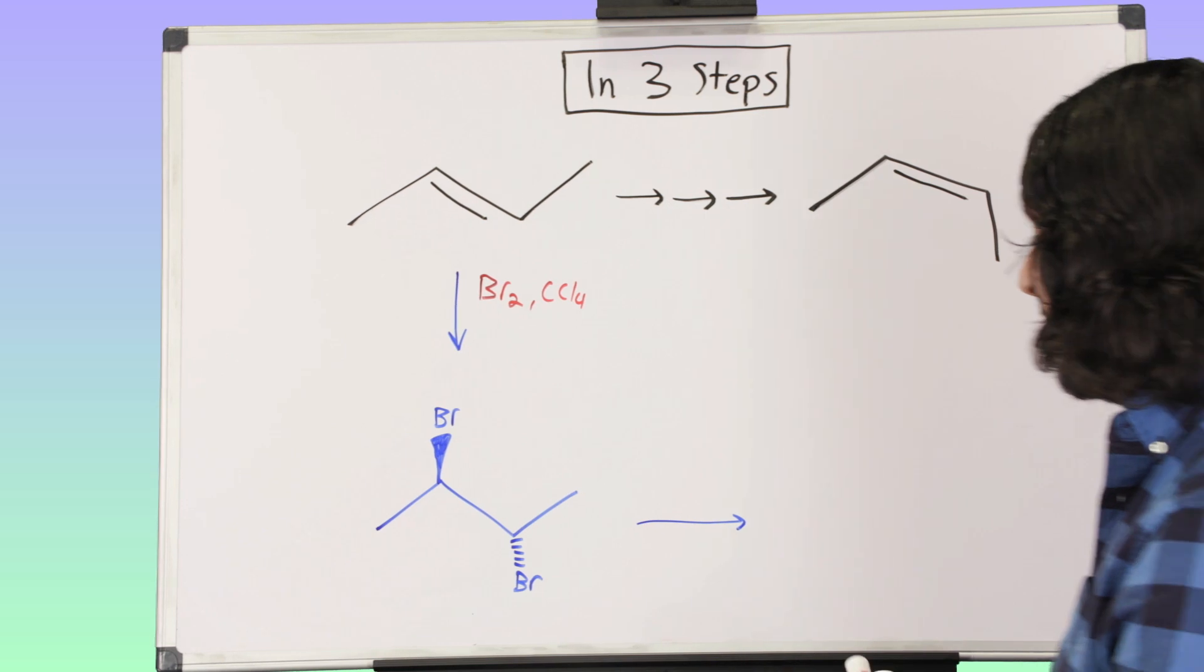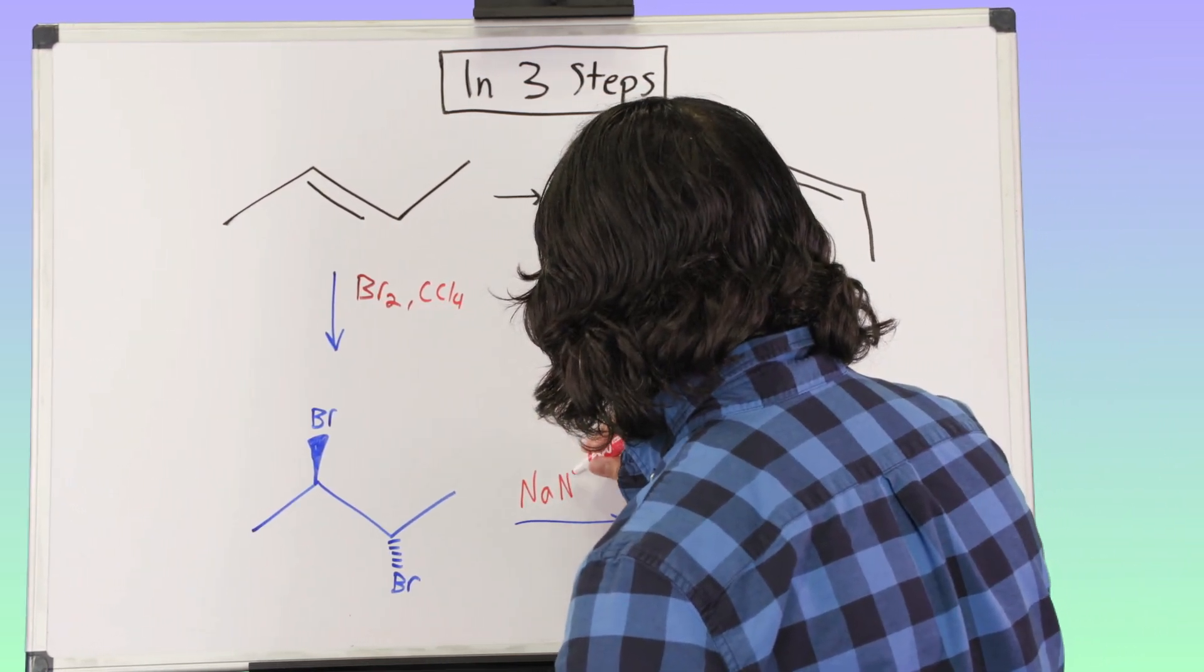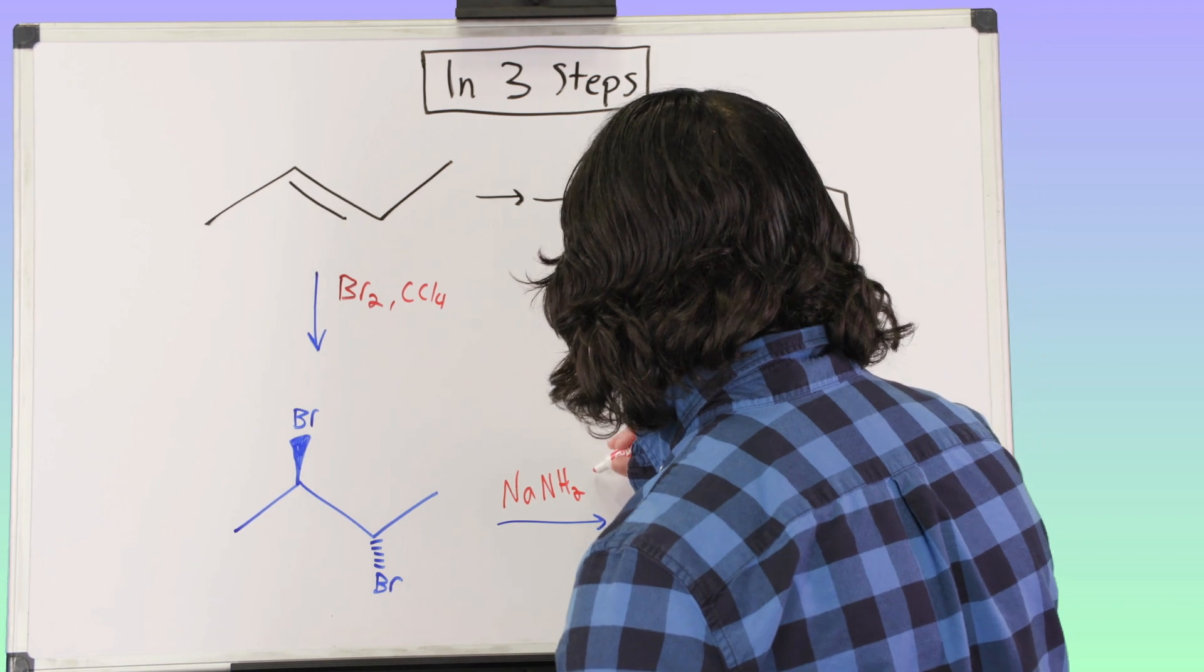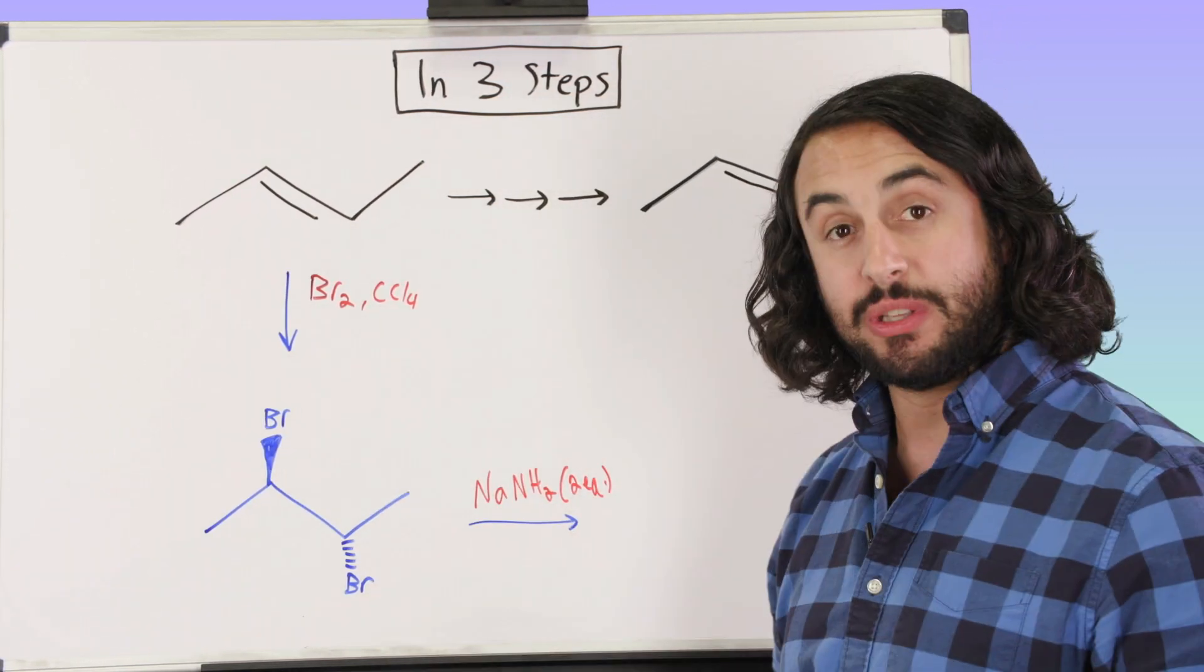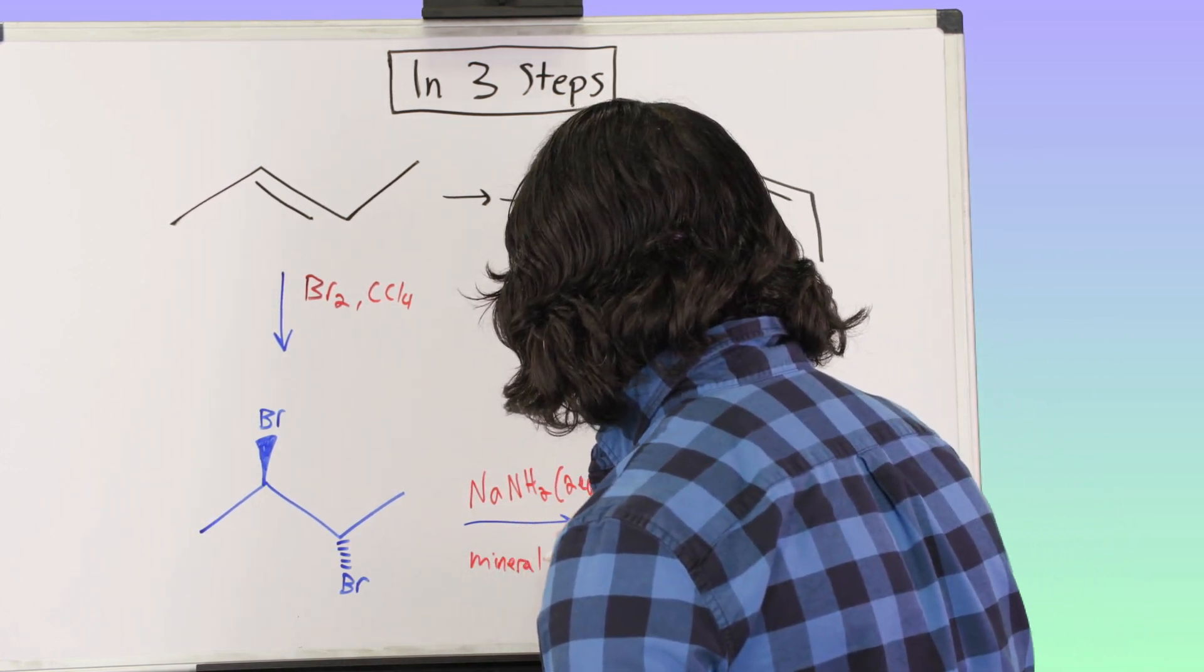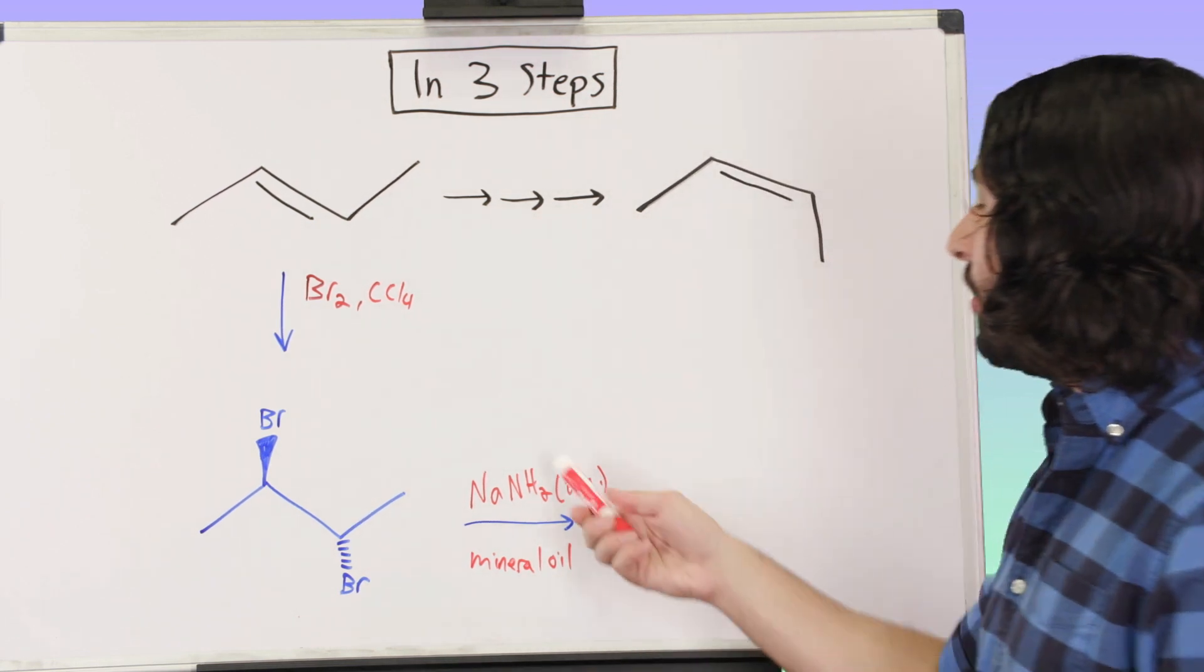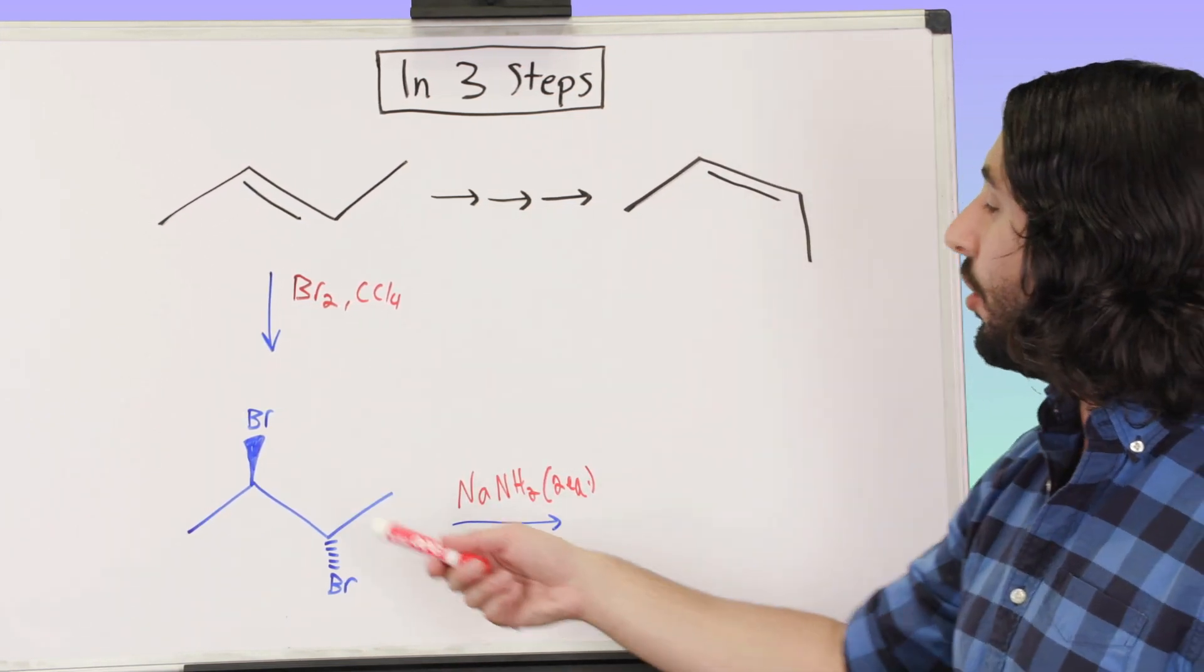Well, we would need a base, a pretty strong base. Let's say we use NaNH2, and we need two equivalents because we're going to do two eliminations. We might run that in mineral oil.